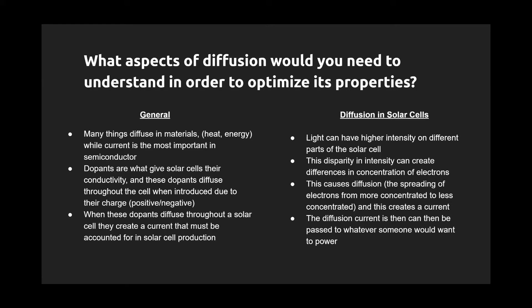More specifically, light can have a higher intensity on different parts of the solar cells, and this disparity in intensity can create differences in concentrations of electrons. This causes diffusion, which is the spreading of electrons from more concentrated to less concentrated areas, and that creates the current. The diffusion current can then be passed to whatever someone would want to use the solar cell to power.